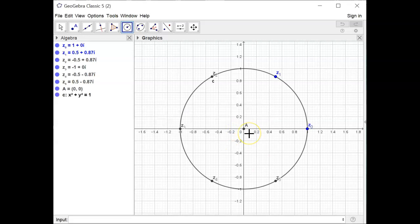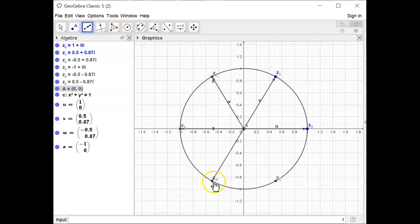If we draw a circle of radius 1, we'll notice that each of those points lies on that circle. We can then look at drawing our vectors from the origin out to each point, which are labelled here as u, v, w, a, b, and d.